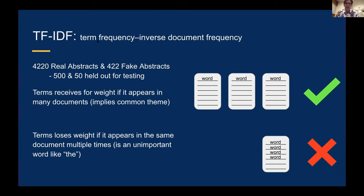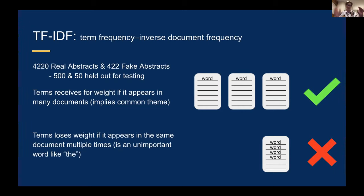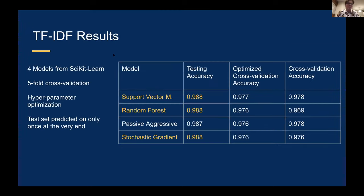The way TF-IDF works is: if a term appears in multiple different papers we give it more weight, but if the same term appears in one document multiple times we down-weight that. So unimportant words like 'the' will appear multiple times in one document and therefore receive less weight. We created training and test sets, used cross-fold validation, and these are our training results. We used four different models from scikit-learn, five-fold cross-validation, did some hyperparameter optimization, and then used our held-out test set just once.